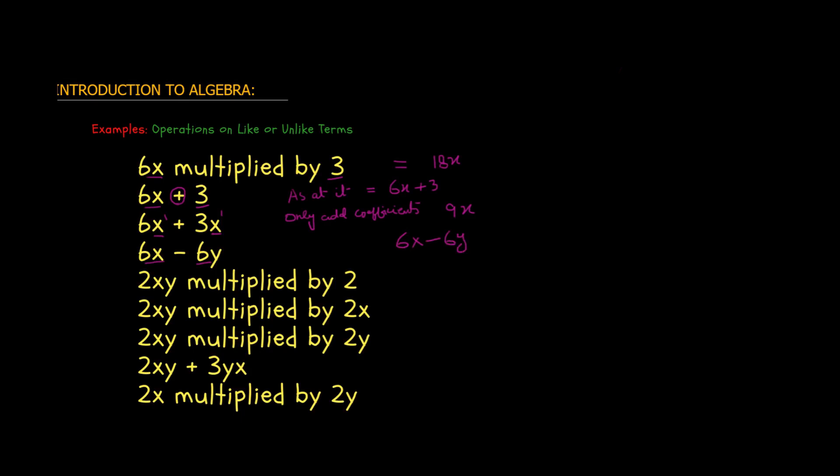Now 2xy multiplied by 2. In multiplication there is no problem. Only the integers multiply when the second term has no variable base. So 2xy multiplied by 2: only this integer will be multiplied by the whole first term. Because 2 has no variable, the result is 4xy.